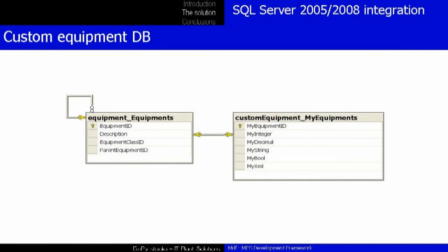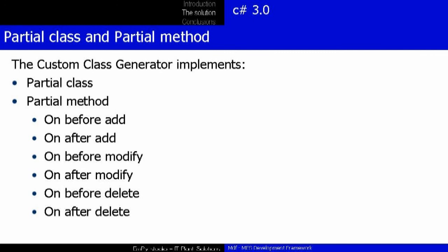As a last step, the custom class generator will create an entity model to ensure that a single entry point allows access to the storage layer. All this will be done using the Entity Framework that Microsoft released at the end of 2008. All the entities have the characteristics of the ISA-95 standard and attributes defined by the user developer. All classes generated by the custom class generator are partial classes and expose several partial methods. Using this technique, introduced by Microsoft with C# 3.0, it will be possible to add custom properties and custom methods, as well as add special control during the add, modify, and delete operations. All this code can be stored in separate files, so the custom class generator will not overwrite them.